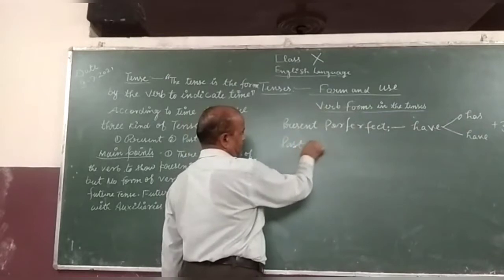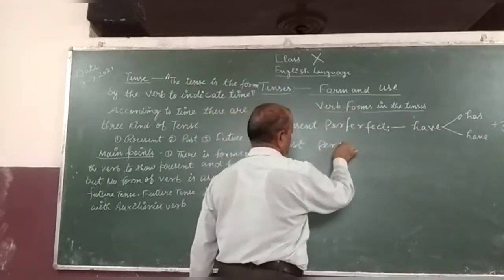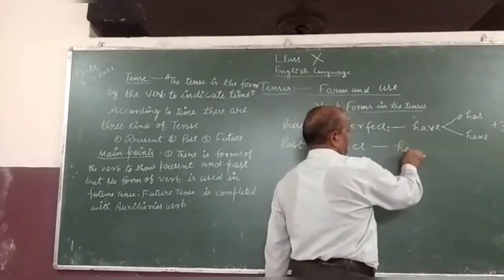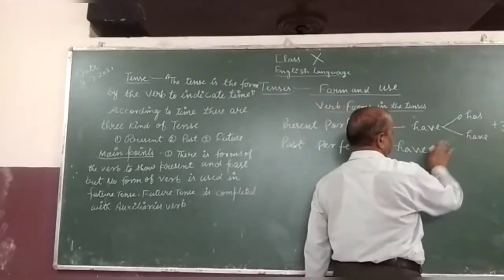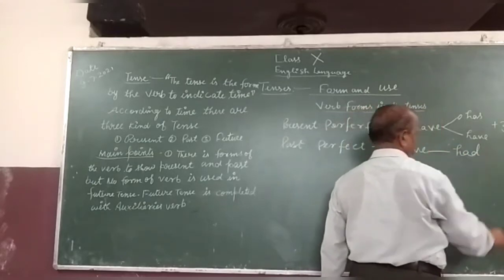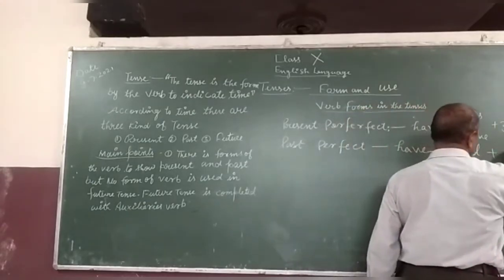Past perfect: we have got a lot. This will be had plus third form. Had is form plus third form of the verb.